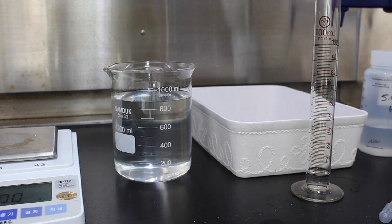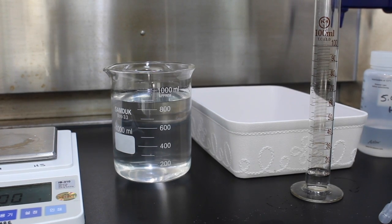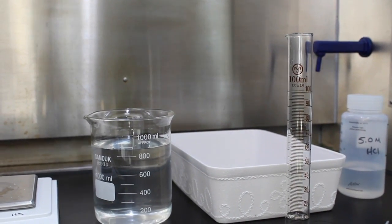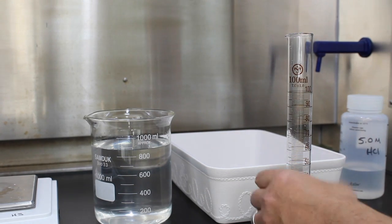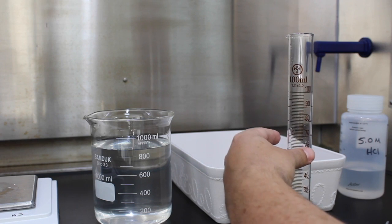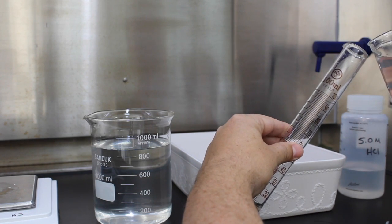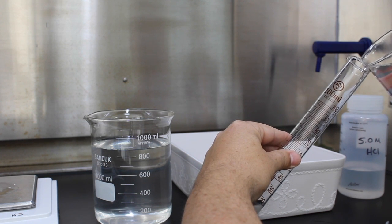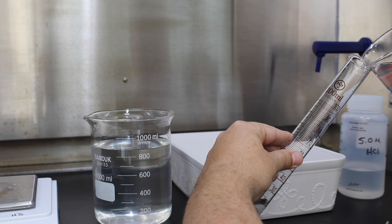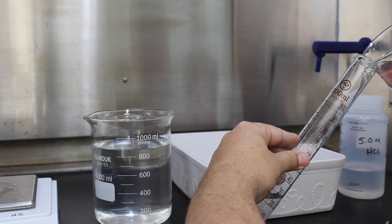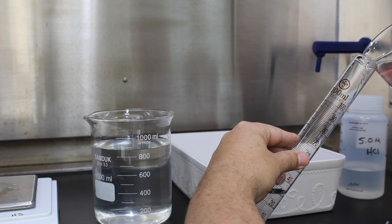Next step we're going to fill the rest of this all the way to the very top with water. And we want to pour that down the side because we don't want the water and the hydrochloric acid to mix too much. So very gently pour down the side. You'll see it mix a little bit. You'll be able to see the swirling. A little mixing is fine.